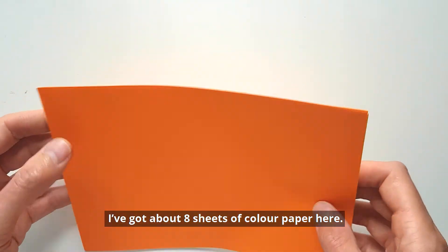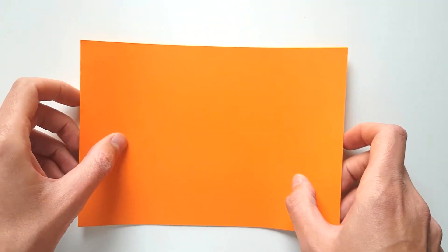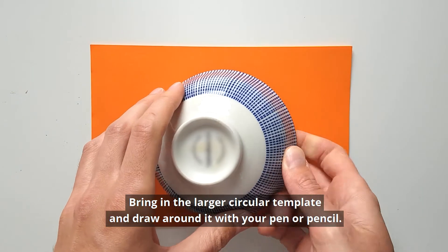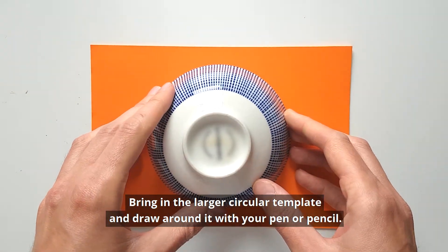I've got about eight sheets of colored paper here. Bring in the larger circular template and draw around it with your pen or pencil.